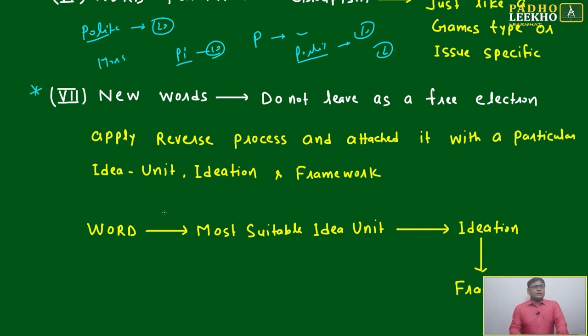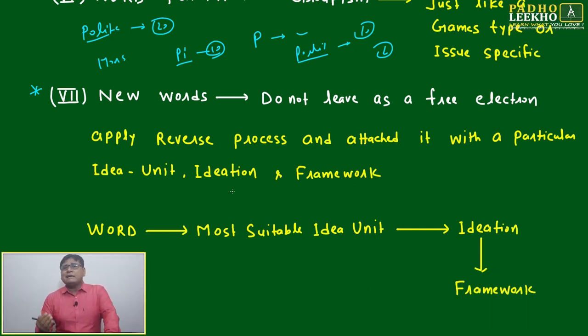New words - the most important resource we're not using properly. We go through lots of new words through observation, our eyes, our brain, but we're not able to keep them in our vocabulary. Why? Because we're leaving them as free electrons. If you will associate somewhere, automatically it will be in your life.